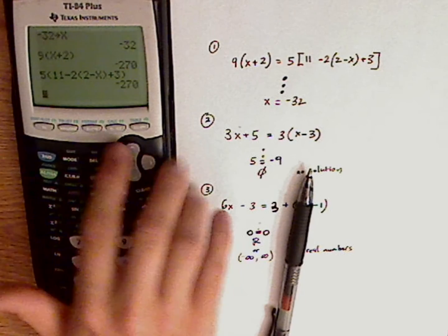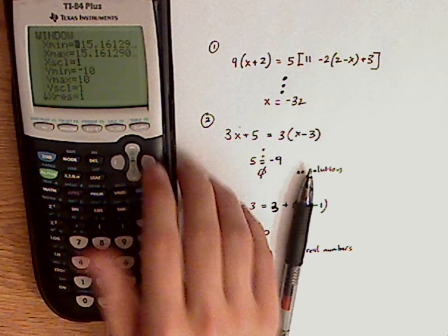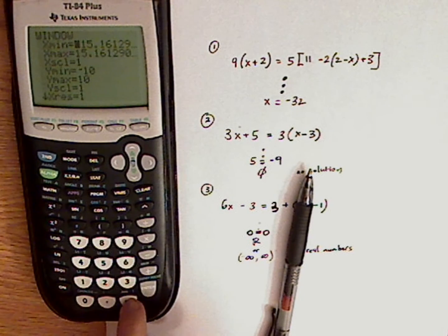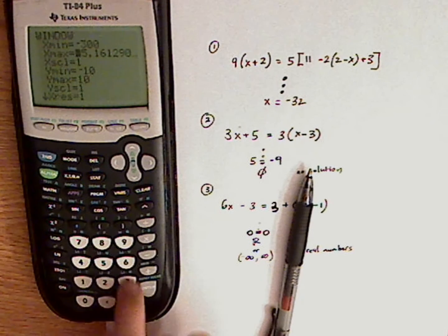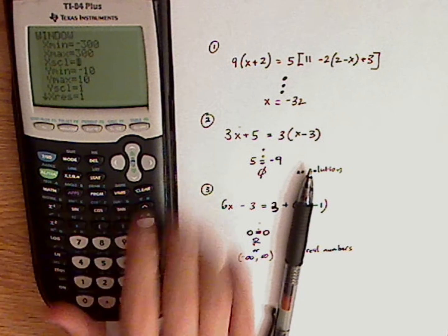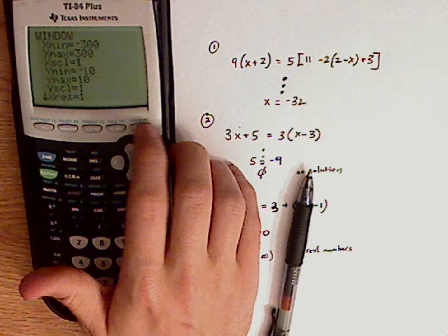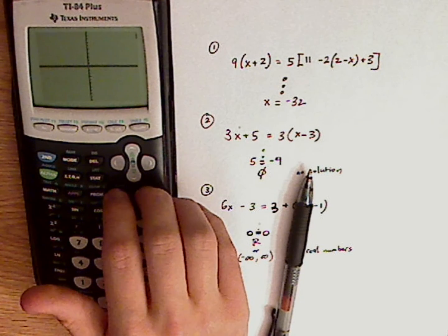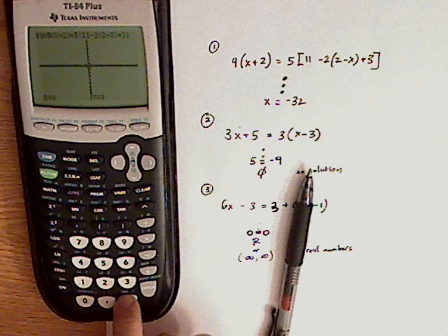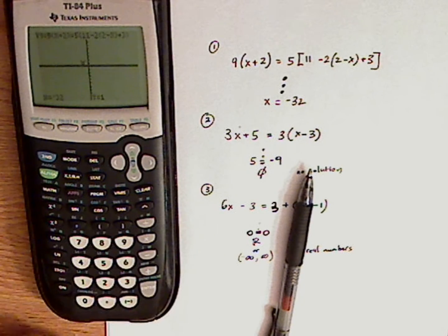So I need to expand my window, expand my x values. Make an incredibly large graph. Push trace. And now I push negative 32.